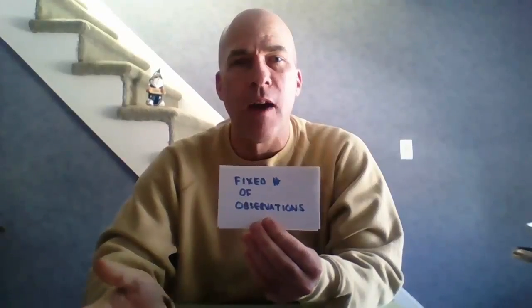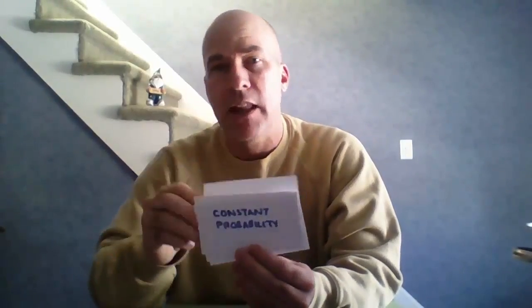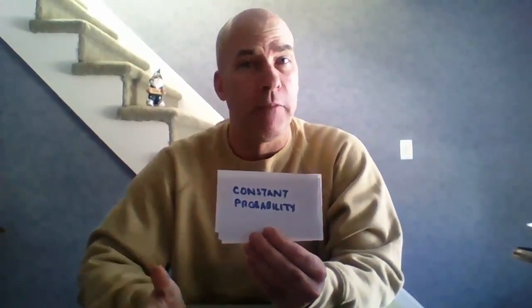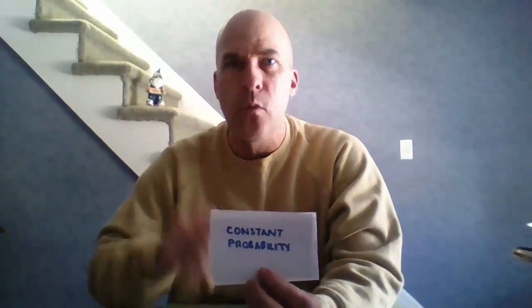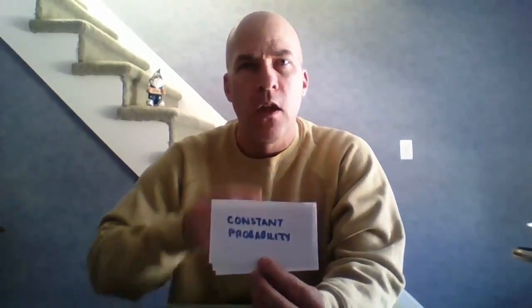You should see some similarities and differences with the binomial. Thinking back to binomial, there are four things that make a binomial distribution: first, you have success or failure every single time; second, you have a fixed number of observations; third, you have independent trials; and fourth, you have a constant probability. Those are the four things to memorize for binomial.